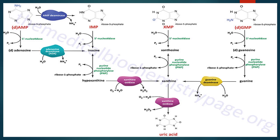The end product of purine metabolism in humans is uric acid. The nucleotide monophosphates AMP (adenosine monophosphate), IMP (inosine monophosphate), GMP (guanosine monophosphate), and xanthosine monophosphate are converted to their respective nucleoside forms — adenosine, inosine, guanosine, and xanthosine — by the action of nucleotidase enzyme.